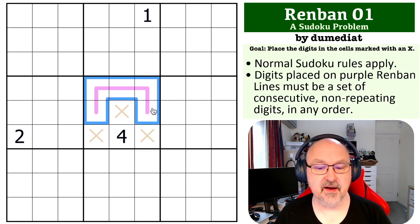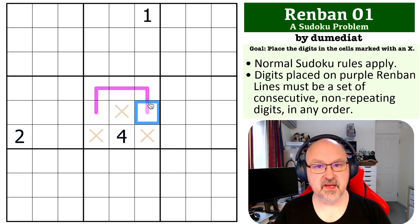If you think about a Renban that is of length five, which this is, you know a five must go onto it because we're working with digits from one to nine. If we start with a one and count up: one, two, three, four, five - we hit a five. If we start with nine and count down: nine, eight, seven, six, five - we hit a five.